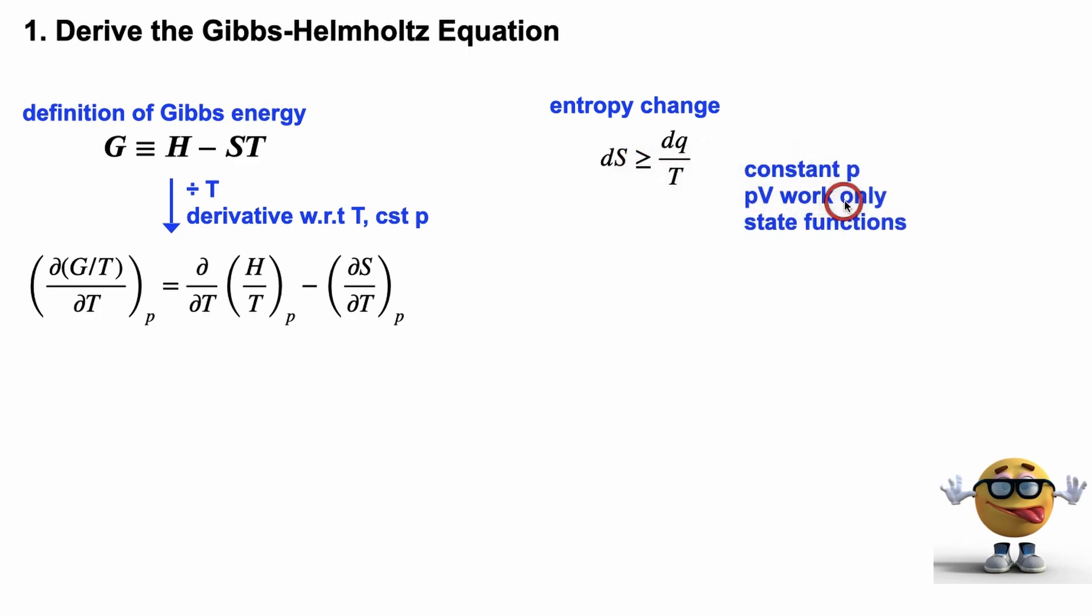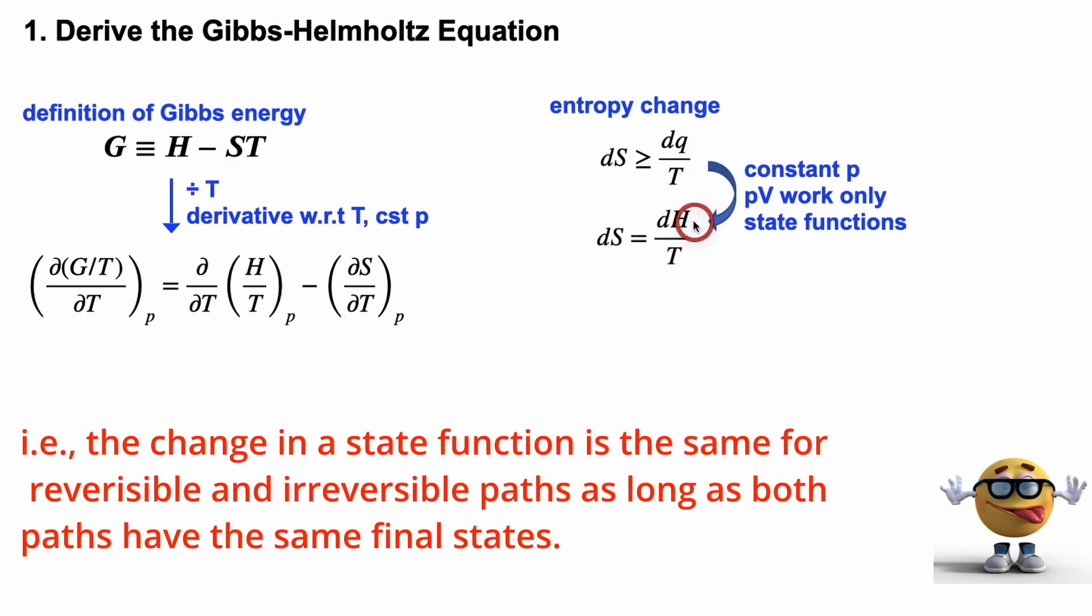But if we assume constant pressure, assume there's pressure volume work only, and if we assume that a reversible or irreversible process, regardless of the path, if we assume that the process has the same initial and final state for the reversible and irreversible process, then we can convert this dq into dH using the first law of thermodynamics right here.